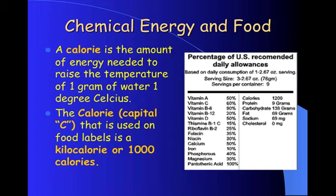Chemical energy in food. A calorie is the amount of energy needed to raise the temperature of 1 gram of water 1 degree Celsius. When we designate calories as a unit of measurement, we use a capital C. So if you remember from when you did your breakfast cereal lab, you were asked to write down the number of calories, and that would have been a capital C if you were to use the label.